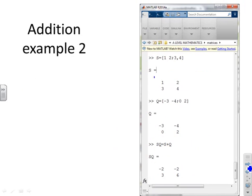Different example. Here you'll see S is a square matrix 1, 2, 3, 4. Q is a square matrix minus 3, minus 4, 0, 2. And if I do S plus Q, MATLAB does the addition for me, exactly as on a piece of paper.